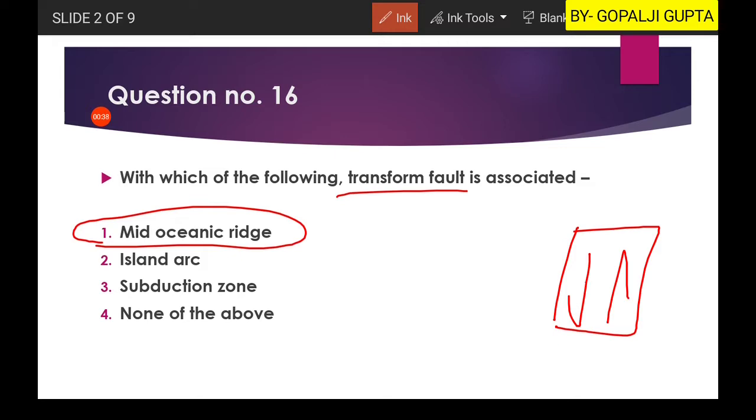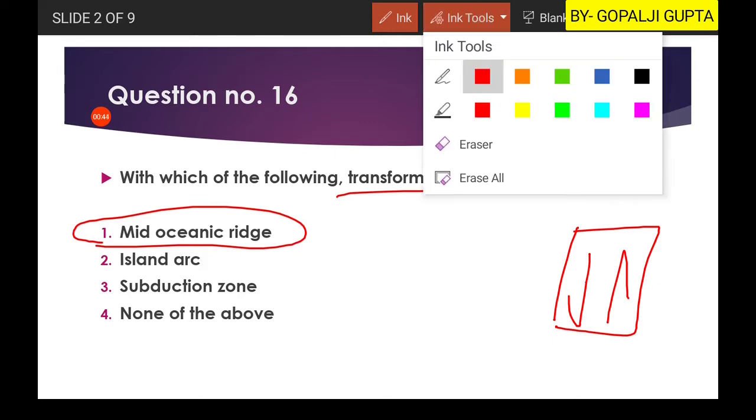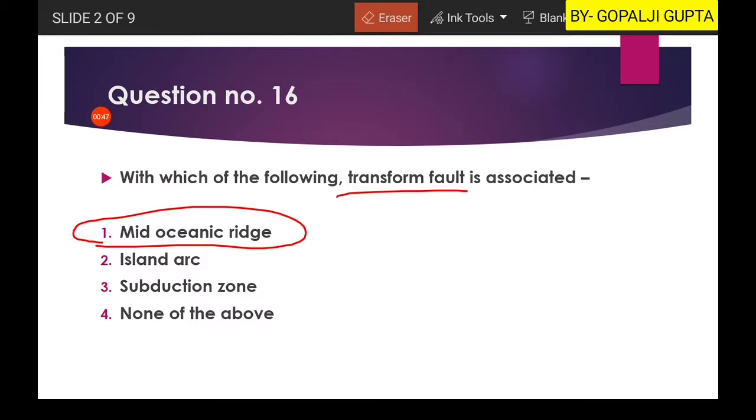So in actual condition, let me erase it first. In actual condition, mid-oceanic ridges are something like this. Okay, so these are the spreading areas. So in this case you have found that some planes are there which are actually facing the transform fault as I am marked from the blue color.